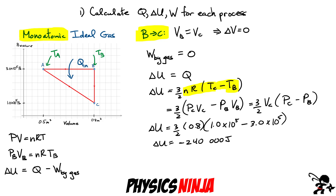Since ΔU = Q for this constant volume process, the heat is also −240,000 joules. This is Q_out — heat leaving the system — equal to 240,000 joules. Now let's look at the last process going from point C to point A.